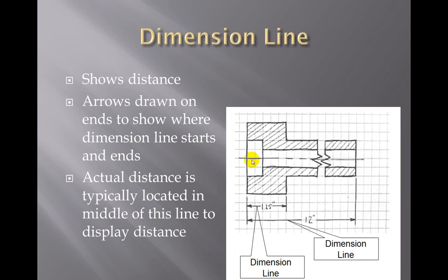Dimension lines are very important to parts. They show the measurements of certain particular parts. Whenever your instructor asks you to annotate a sketch, often dimensions are part of your annotations. The actual distance is typically located in the middle of the two arrows that you draw that show the length of the part. The arrows are used to show where the dimension line starts and ends.